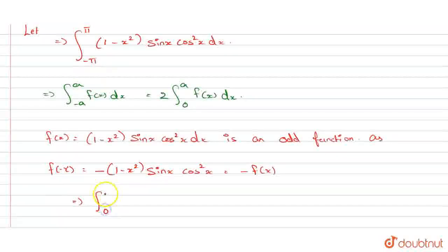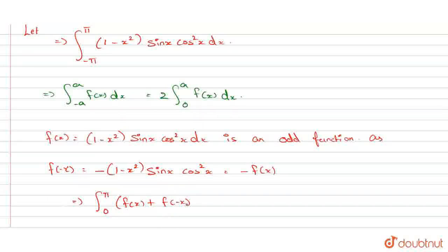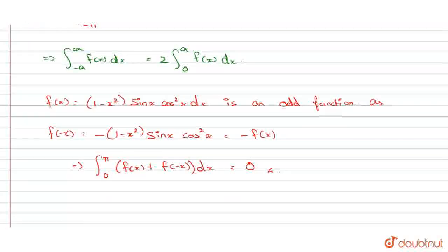So, integral 0 to pi [f of x plus f of minus x] into dx equal to 0 is the answer. This is the answer of this question. That's all. Thank you, students.